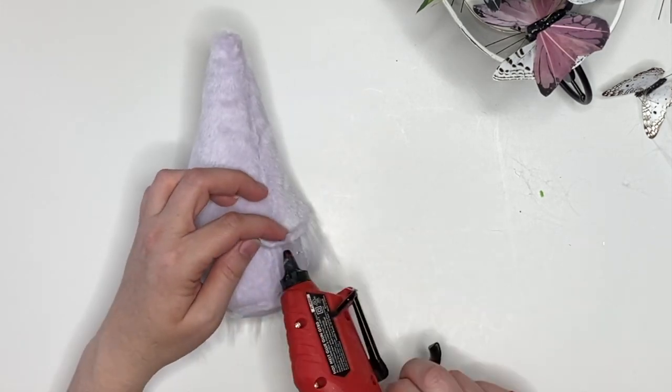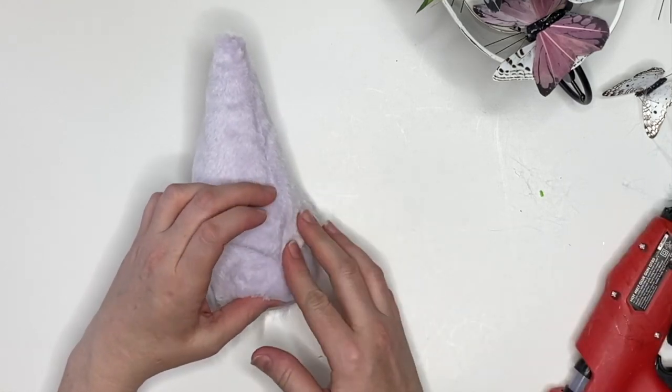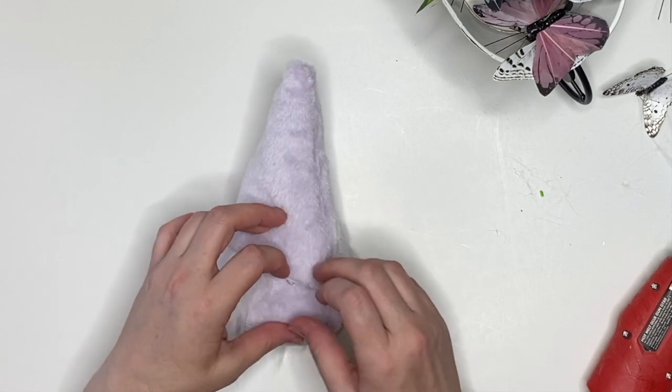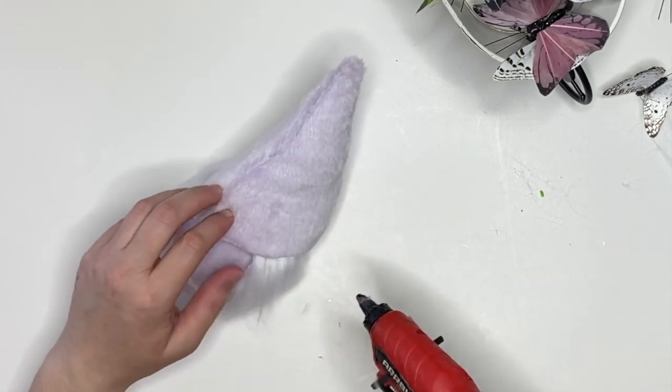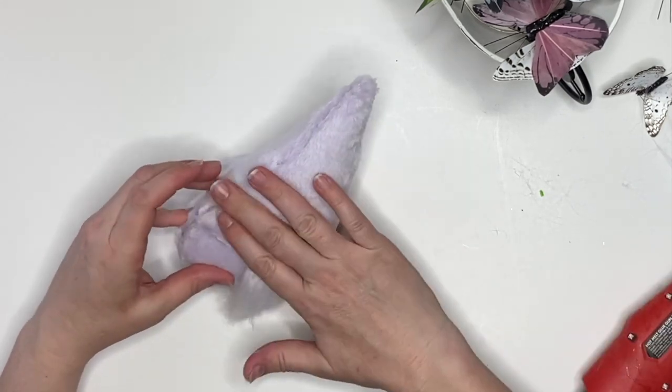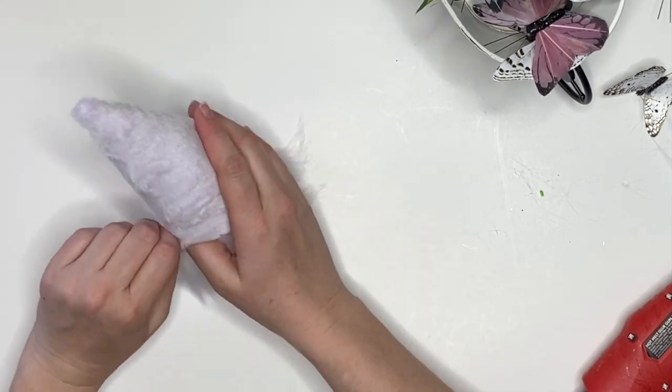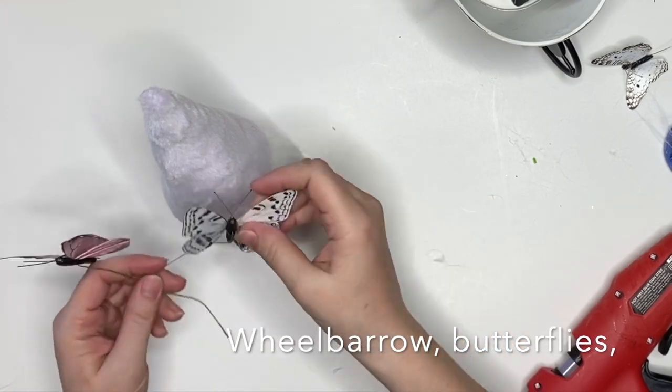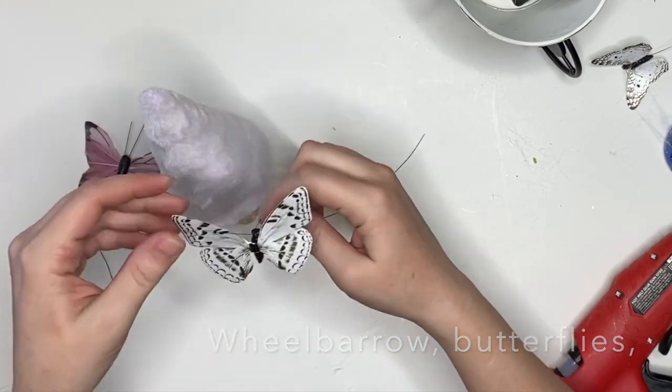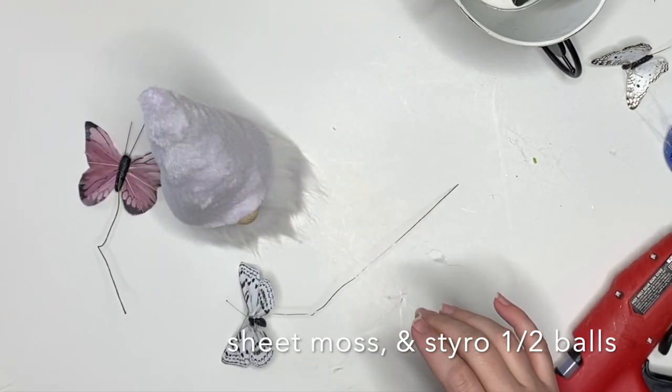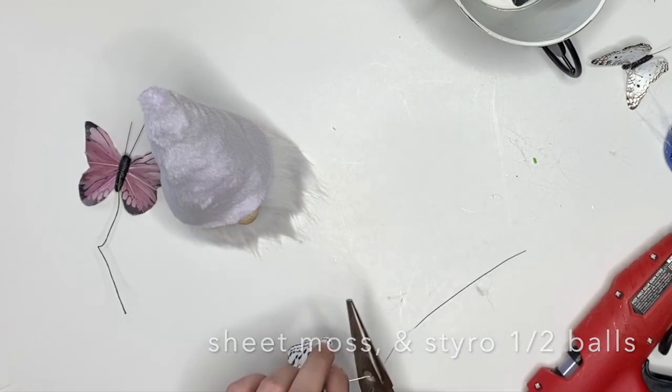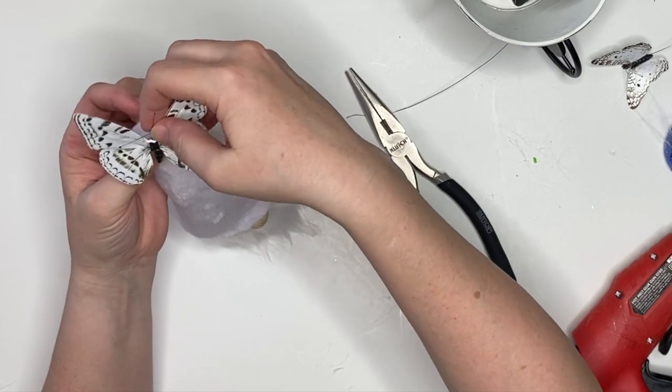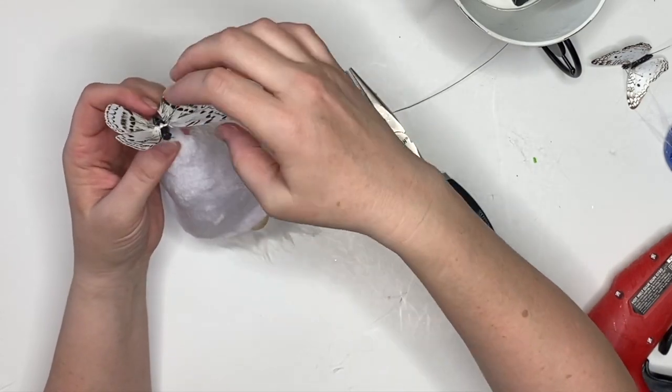All right, so you can leave him as he is, but I'm not going to. I got a wheelbarrow and butterflies from Michaels, and these butterflies have a floral pick already attached. What I'm going to do is cut maybe between one and two and a half inches of the floral wire.